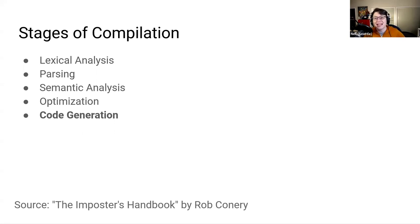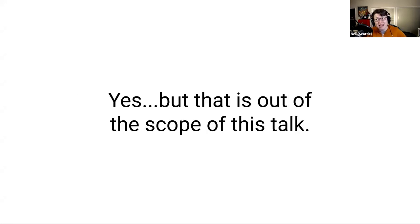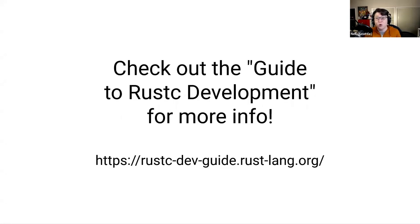When we look at all the stages laid out in a list like this, it seems like they would run linearly, and in some compilers they do. However, if you've delved into the Rust compiler internals, you might be thinking: isn't the Rust compiler at least partially query-based rather than linear-based? And the answer is yes, but that is out of scope for this talk. For the sake of clarity, I'll speak to the internals of the Rust compiler as if they were functioning linearly. If you want to learn more about how the Rust compiler is query-based, check out the guide to rustc development.